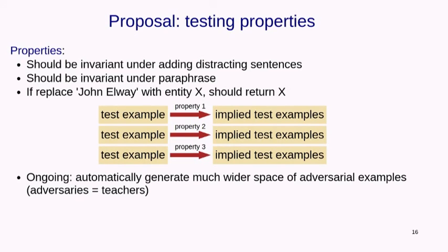These obvious properties do not hold for complex neural models that are fitting all sorts of statistical correlations — they don't behave predictably as you might hope. The idea of property testing is to expose these weaknesses. We're investigating a wider space of adversaries using crowdsourcing. One interesting idea is that the adversary is the same as the teacher — only the adversary is at test time and the teacher is at training time.